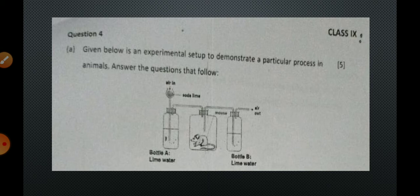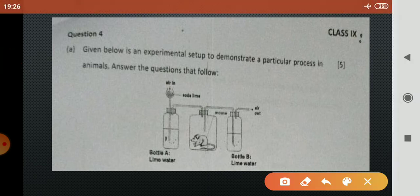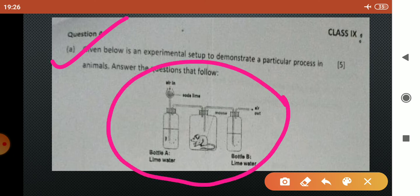This is question number 4 of section 2. Given below is an experimental setup to demonstrate a particular process in animals. In the centre a mouse is kept and on both the sides of the mouse two bottles are present. Both the bottles contain lime water and they are labelled as bottle A and B respectively.